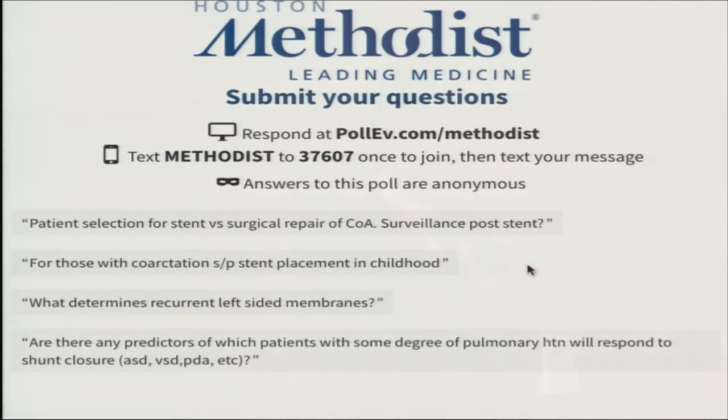What determines recurrent left-sided membranes? I'm assuming the question is about clinical predictors of left-sided membrane recurrence. If the surgeon doesn't get all the material out — and most of these are surgical — certainly sub-aortic stenosis recurs. The surgeon has to make sure they get all the abnormal membrane out the first time. I think the same would be said for mitral valve membranes as well.